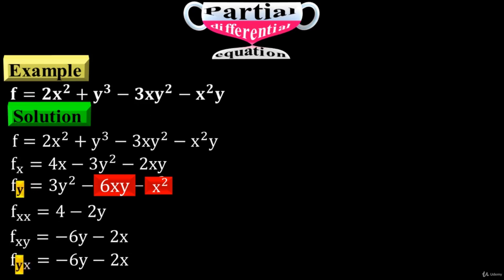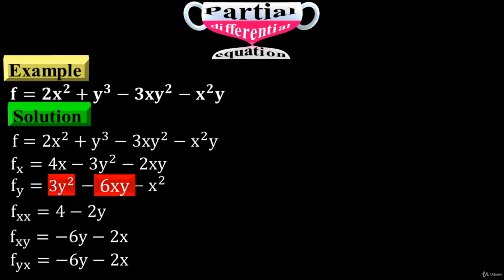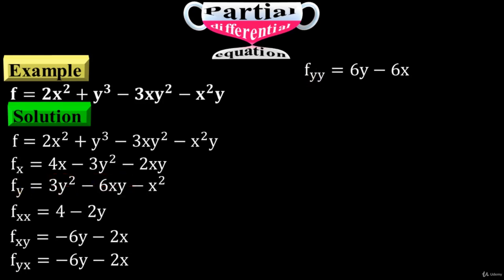Differentiation of f sub y with respect to x is minus 6y minus 2x. Now take it again and differentiate with respect to y. y variables are here, so just differentiate these terms with respect to y to have f sub yy equals 6y minus 6x. That completes the second order.